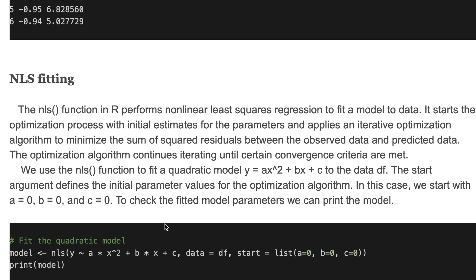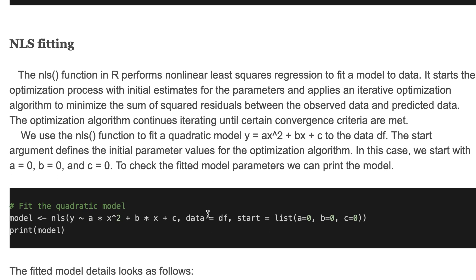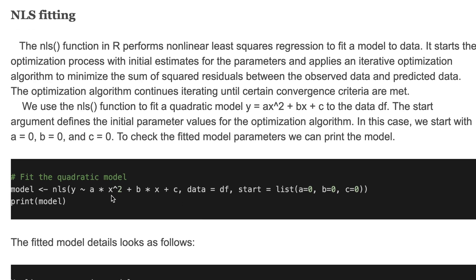The nls() function in R performs nonlinear least squares regression to fit a model to data. It starts the optimization process with initial estimates for the parameters and applies an iterative optimization algorithm to minimize the sum of squared residuals between the observed data and the predicted data. The optimization algorithm continues iterating until certain convergence criteria are met.